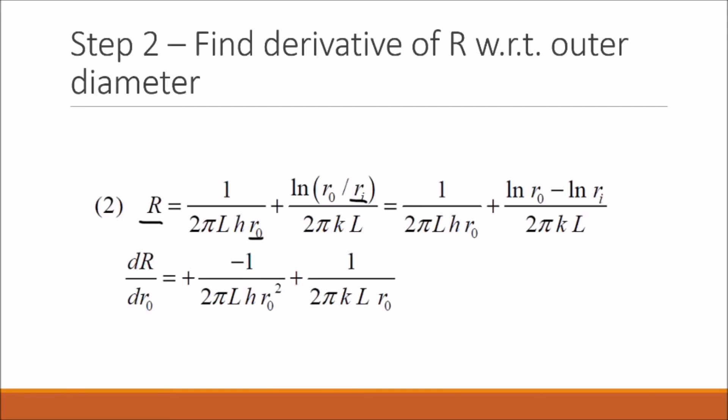Here we have a function of the resistance in terms of r₀ as well as rᵢ. If we hold rᵢ constant and vary the outer thickness, we can determine the derivative of R with respect to the outer diameter. By taking this derivative, we end up with this equation here.